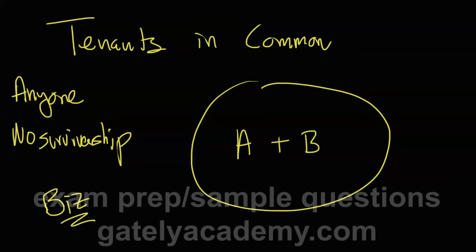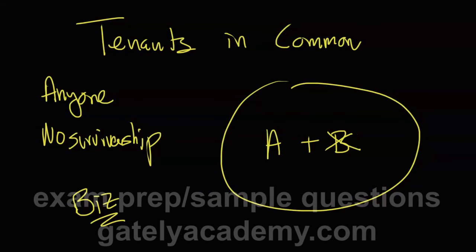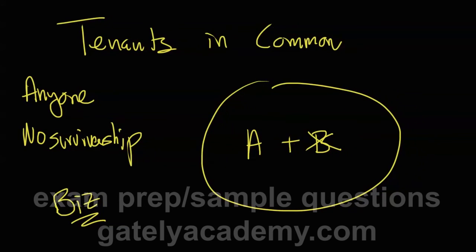And for whatever reason, one of the business partners passes away. Who will the new ownership group be? Wait, think about that for a second. If one of the parties passes away and there's no survivorship, let's just say B passed away. Who is the new ownership group?